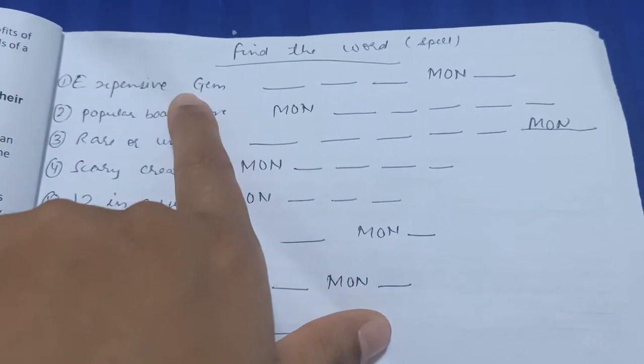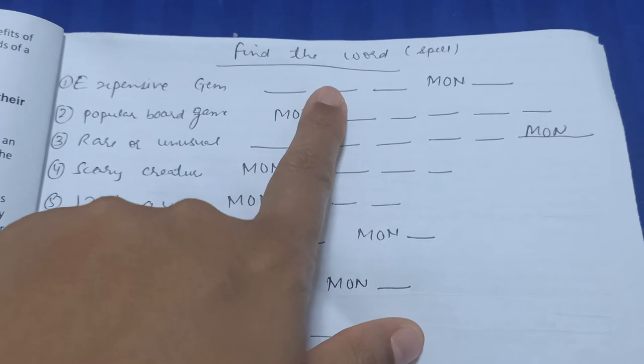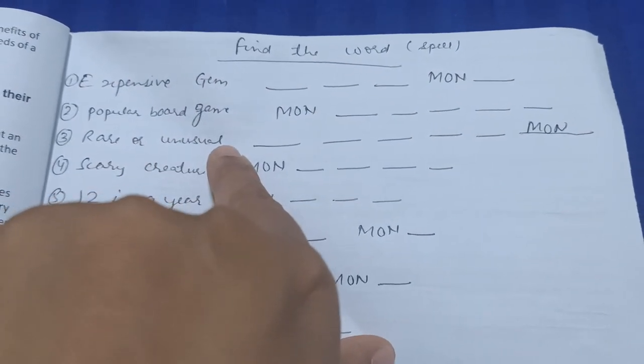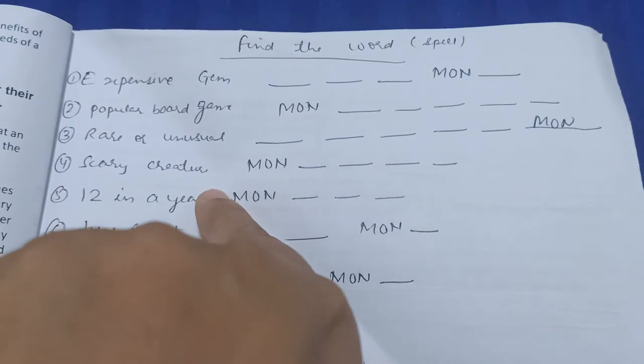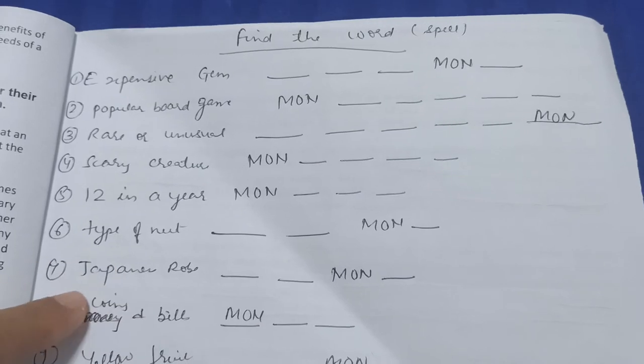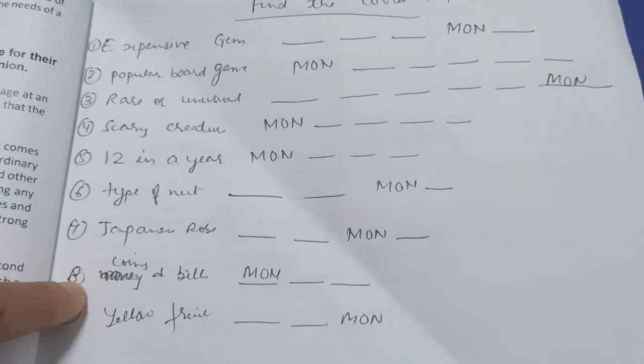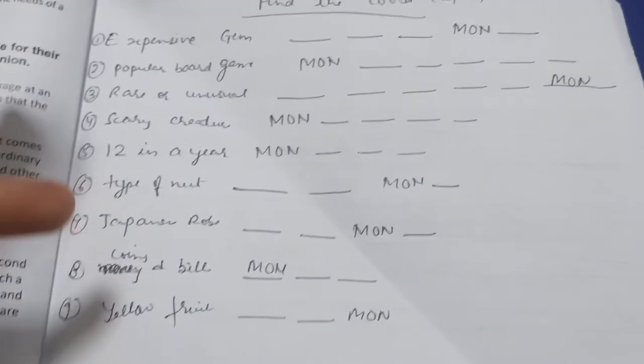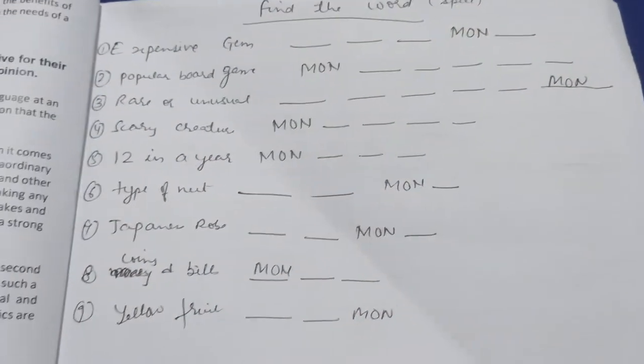First she has to think what gem I'm talking about—it's diamond, can she do the spelling? Popular board game: Monopoly. Rare or unusual: uncommon. Scary creature: monster. Twelve in a year: months. Type of nut: almond. Japanese robe: kimono. Coins and bills: money. Yellow fruit: lemon.